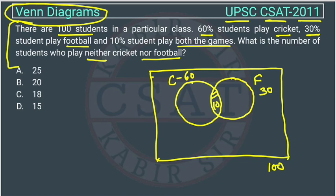The overlap is 10. The total cricket circle is 60, so the cricket-only portion will be 50. The total football circle is 30 and the overlap is 10, so the football-only portion will be 20.